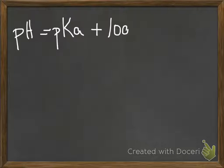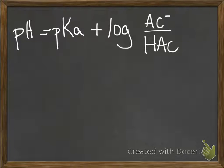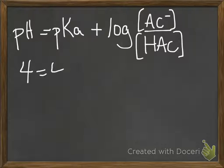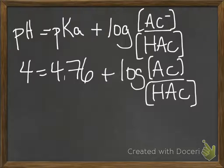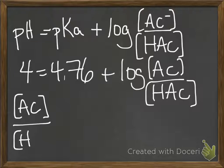So you can set up a Henderson-Hasselbalch equation with the information we have so far and solve for the molar ratio of acetate to acetic acid. And when you do the subtraction and take the antilog, you end up with the molar ratio of acetate to acetic acid being 0.17.